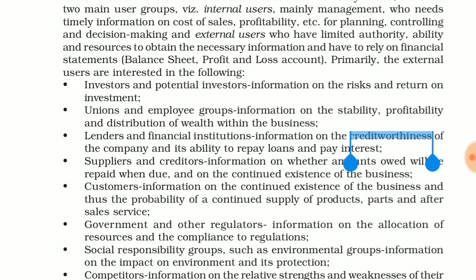The third point is lenders and financial institutions — information on the credit worthiness of the company and its ability to repay loans and pay interest. Lenders — those who give loans, for example banks or other institutions — want to know whether the money they gave to a company for running a business will be returned. So to know the credit worthiness, the ability to repay loans or interest, they need accounting information.